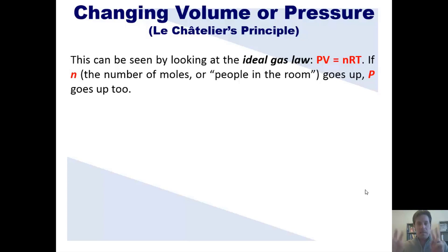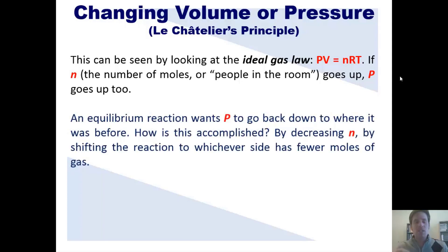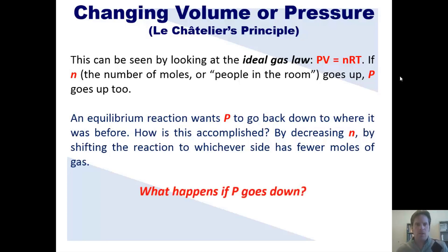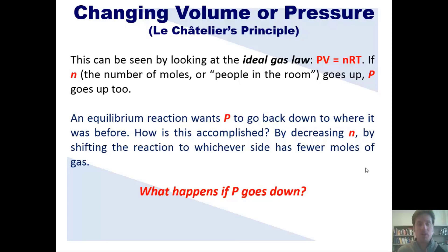This can be seen by looking at the ideal gas law, P = NRT. If N, the number of moles, goes up, then pressure goes up. An equilibrium reaction wants P to go back down to where it was before. This is accomplished by decreasing N — the number of gas molecules — by shifting the reaction to whichever side has fewer moles of gas. Now, what if P goes down? In that scenario, the equilibrium reaction is going to adjust in whatever way increases P, and that will happen by shifting the reaction in whichever direction has more gas molecules.